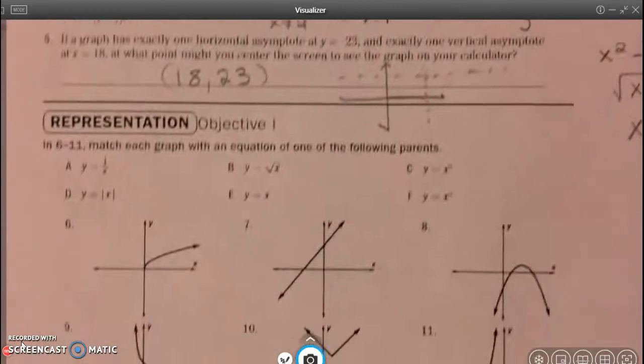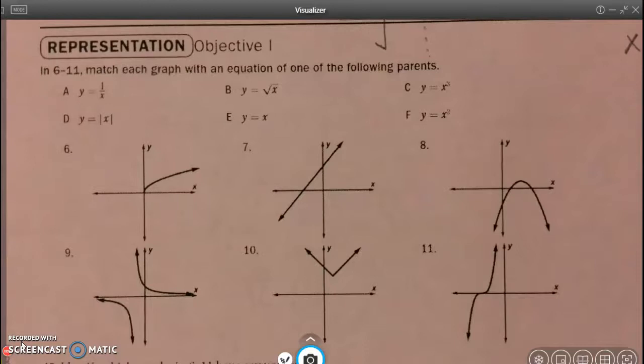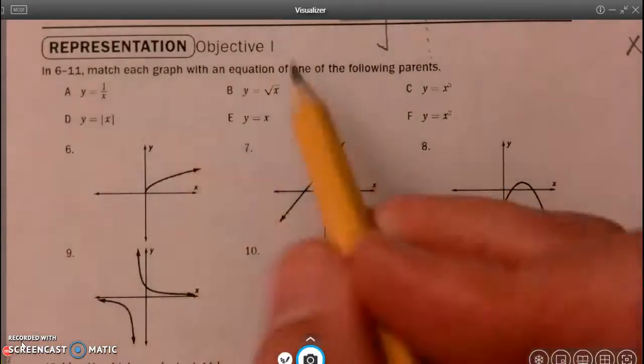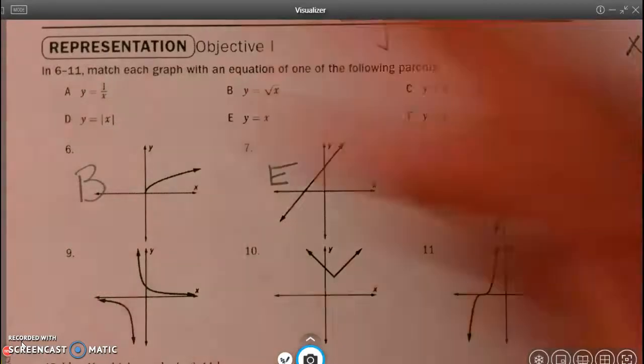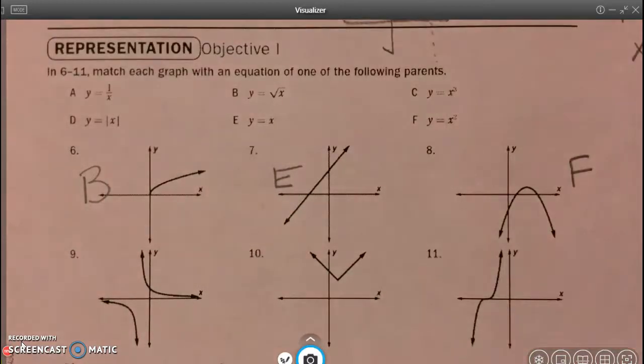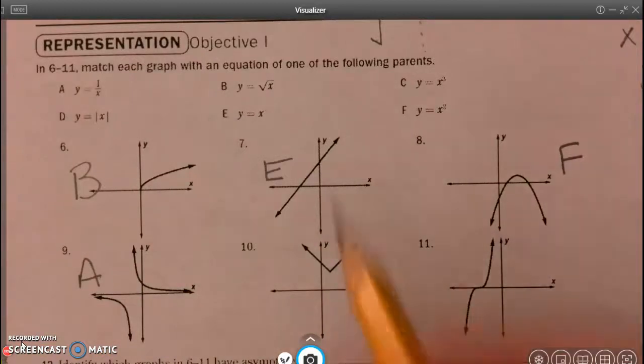All right, down here in 6 through 11, we're going to match the graph with its parent function. All right, so number 6, I remember that that's that square root. It looks kind of like the square root symbol, and so that's my letter B. Number 7 is a line, which is my letter E. Number 8 is a quadratic, so the parent function is F. Number 9 is my 1 divided by x, because I've got my curves in my top and my bottom quadrants, so that's my letter A. There's my V, my absolute value V, which is D. And this is my cubic function, which would be letter C.